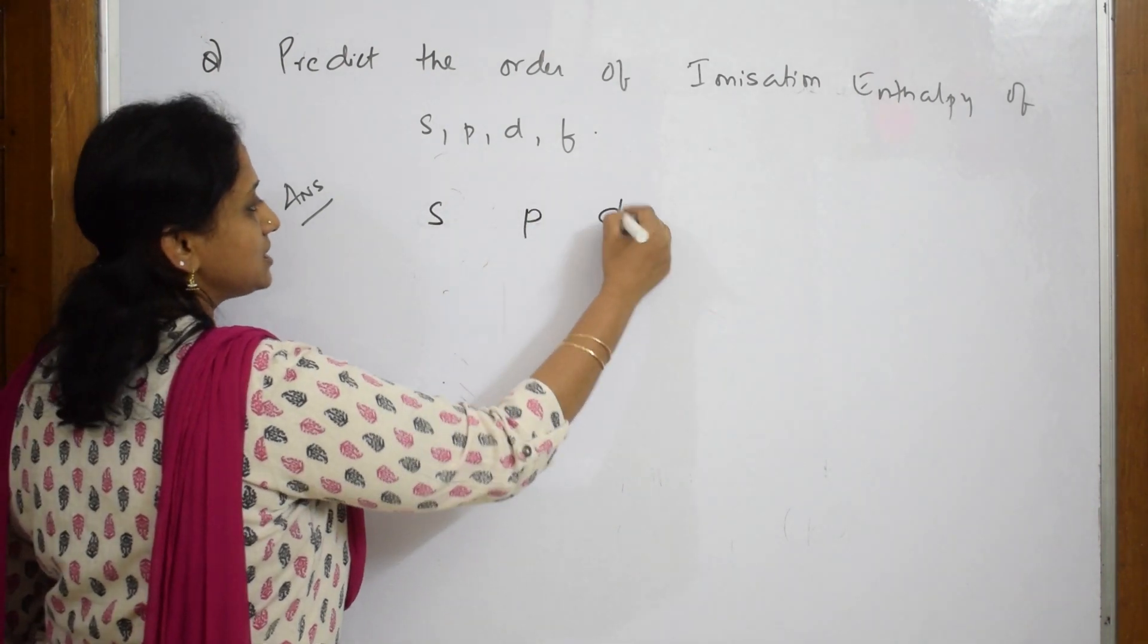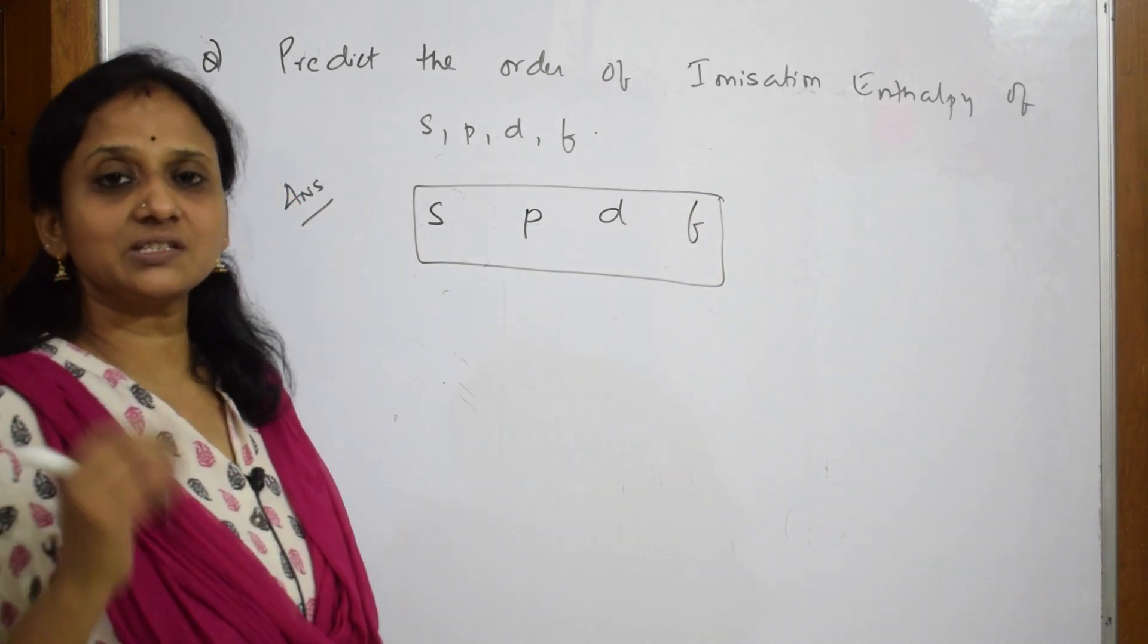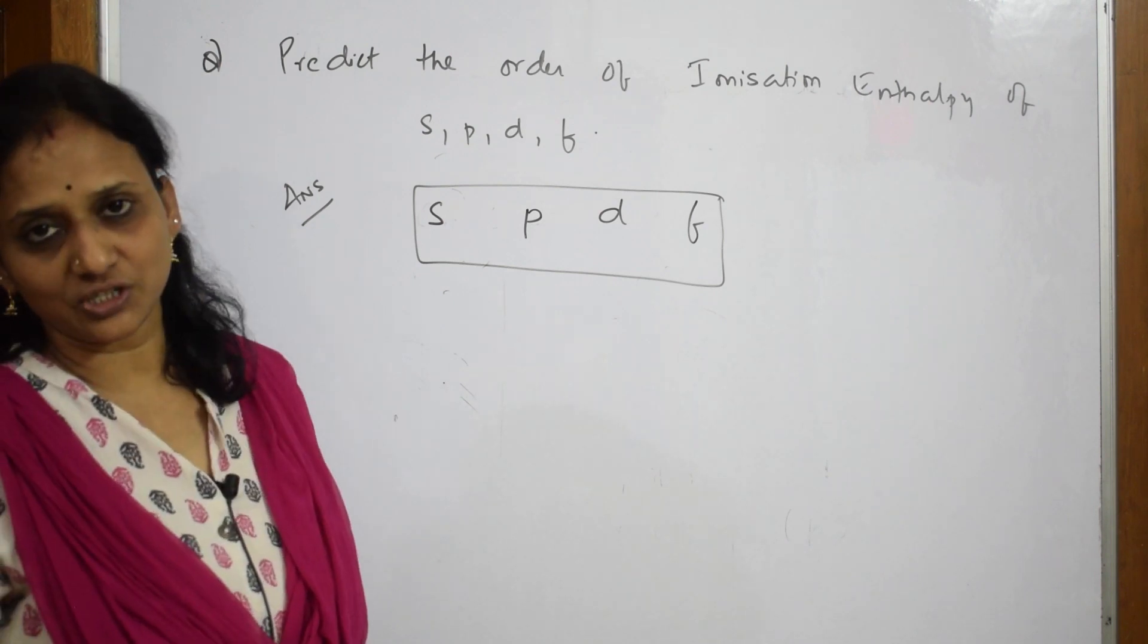Like this: s, p, d, and f. So I have to write the order. I very well know ionization enthalpy is the amount of energy required when an electron is removed from its valence shell. Okay, that means a neutral gaseous atom. So among all these, which is closer to the nucleus? Yes. Which will require more ionization energy?